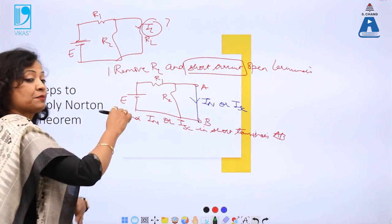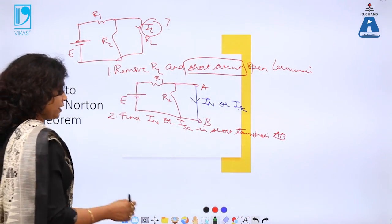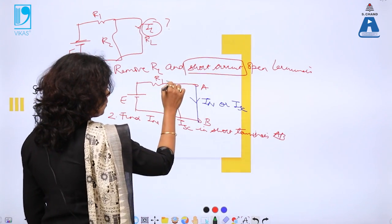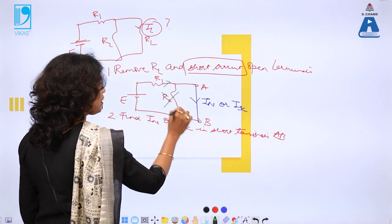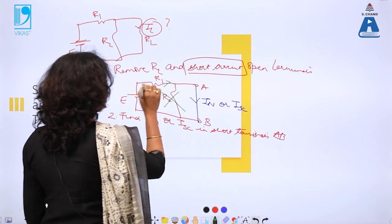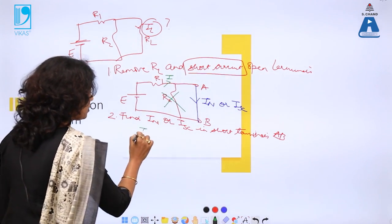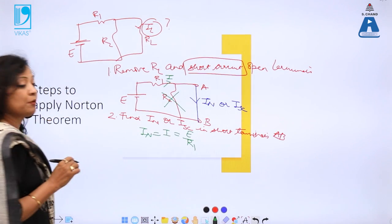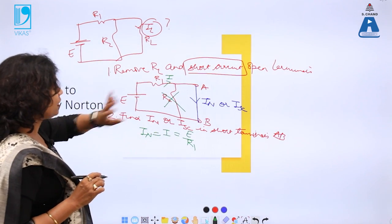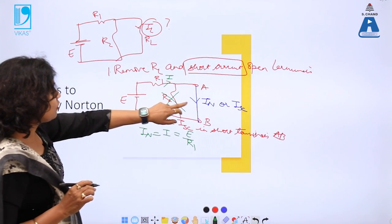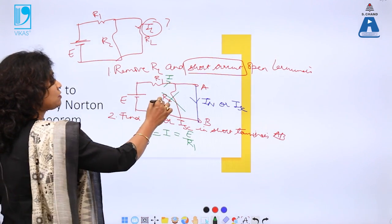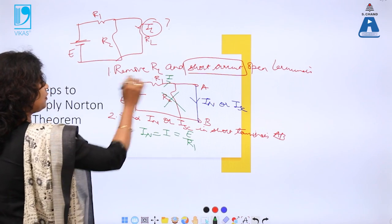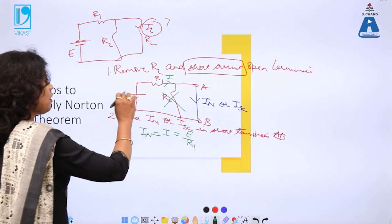For this particular example, the current coming from this side has two paths: one through R2, and another through the short circuit. So there will not be any current in R2 — all the current flows through the short. Therefore, I_Norton for this particular case will be I, where I = E/R1. This is not the standard form; R2 is shorted because of the short circuit, so there is no current in R2. My current I equals V/R1, and this is my I_Norton for this particular example.